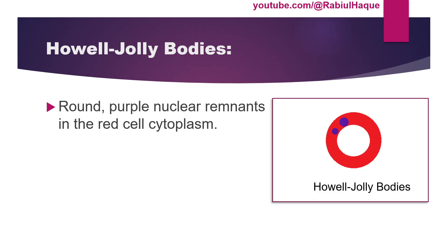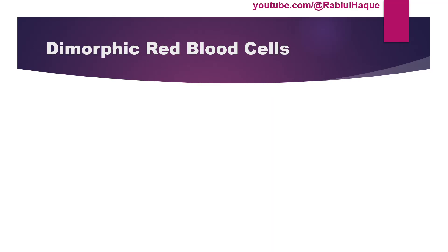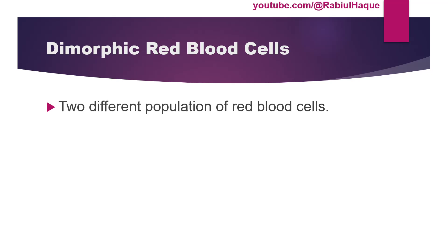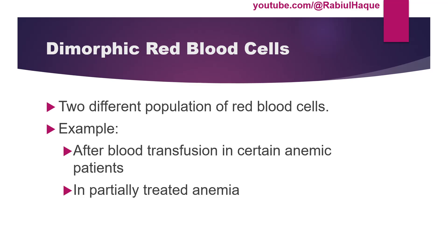Another morphological term is dimorphic red blood cells, where there will be two different populations of red blood cells. For example, a patient with severe iron deficiency anemia has a microcytic hypochromic blood picture. If that person is transfused with normocytic normochromic blood, after transfusion the patient will have two populations — their original microcytic hypochromic cells and the transfused normocytic normochromic cells. This is an example of dimorphic red blood cells.